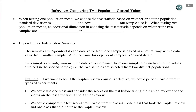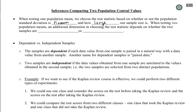If you recall from the previous module, when doing inference on a single population mean, we had to know something about whether our standard deviation was known and how large our sample size was. The scenario where sigma is unknown is more realistic. Within that context we had the t-test, and also the z-test when the sample size was large. We have similar considerations here when dealing with two populations.